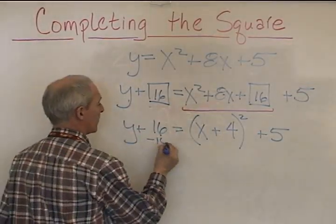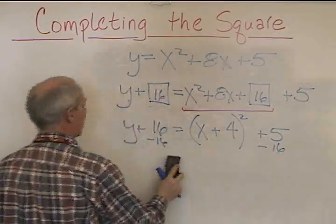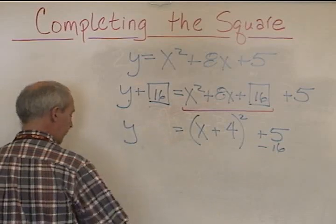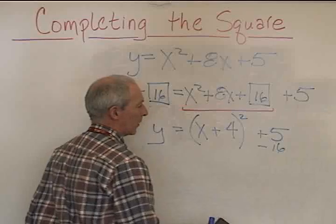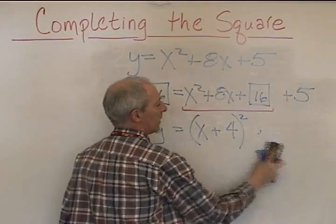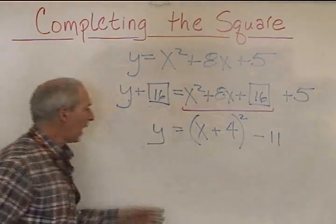So we will subtract 16 from both sides. And this side gives us the y by itself. So we get y is equal to x plus 4 quantity all squared. This becomes negative 11, and we're done.